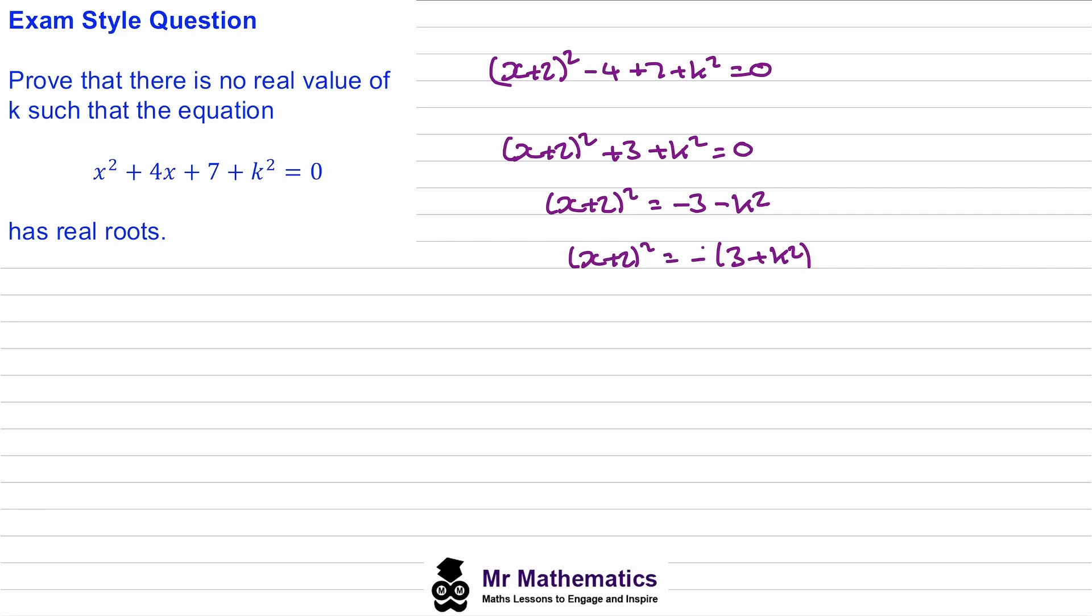When you expand on this negative you get the −3 and the −k². If we look at the left hand side, (x + 2)², we know this could be greater than or equal to 0. If x was equal to −2 we'd have 0², which is 0, and any other value squaring it would make it positive, so it will be greater than 0.